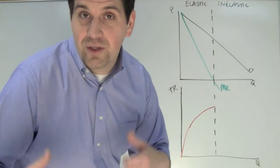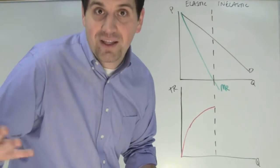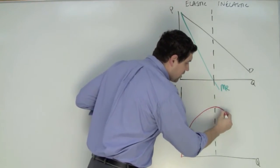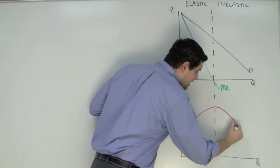If you sell a unit and the additional revenue is zero then your total revenue is going to be maximized. When the marginal revenue is negative the total revenue is going to start going back down again. This curve right here is the total revenue.